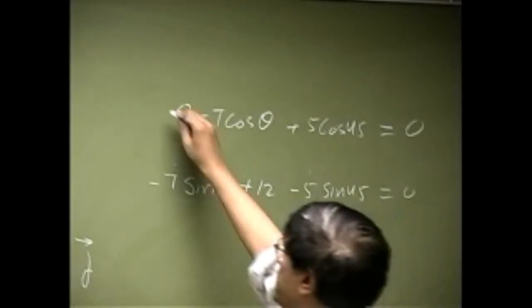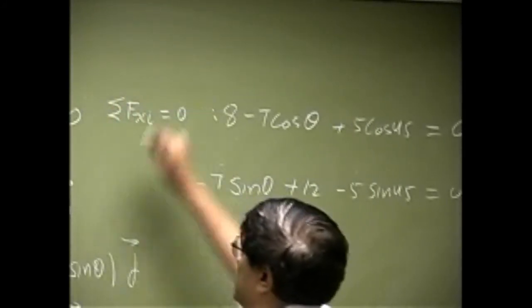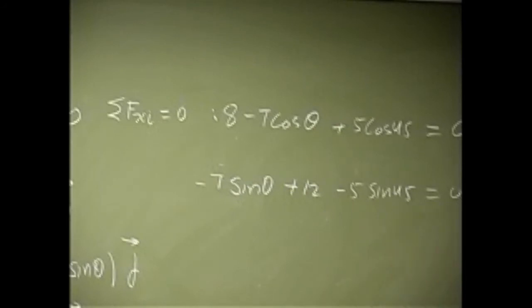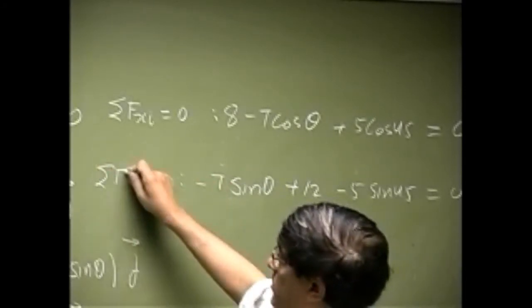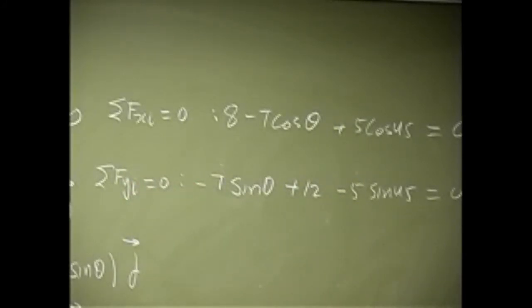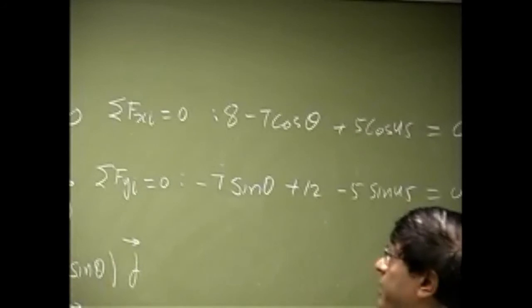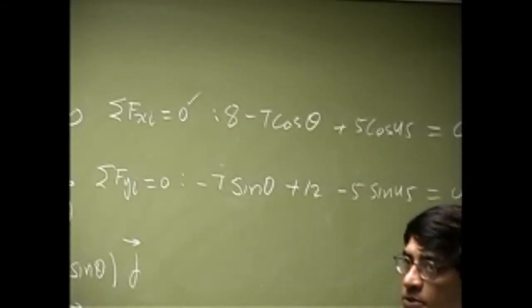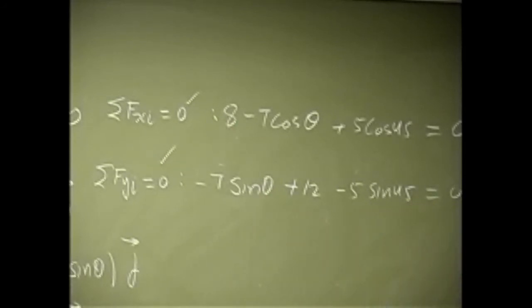So your first equation here is the same thing as sum of forces in the X direction goes to 0. When you took all the X components, you added them together and that should be the first equation. Second equation will be sum of the forces in Y direction and they all add up to 0. So in general, when you are working on the problem, you don't really go through this step. What you do is you directly write this equation by looking at the components. You can skip all the vector parts and you can go directly from this figure to this set of equations.